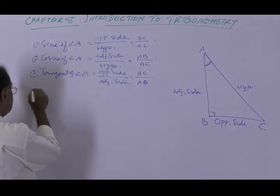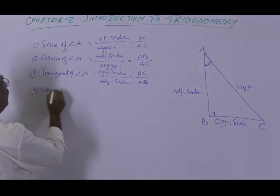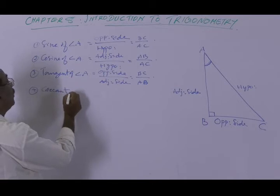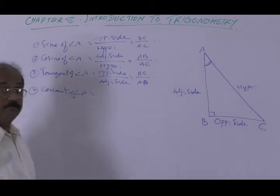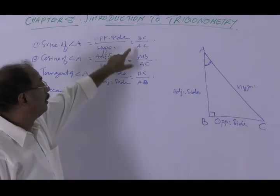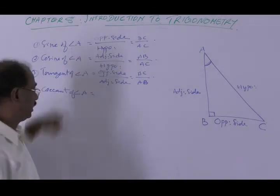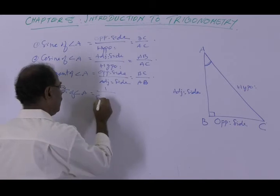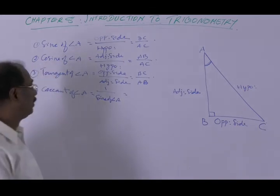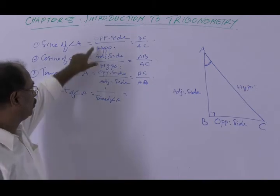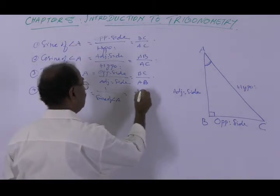The fourth ratio is cosecant of angle A, which is equal to the reciprocal of sine of angle A — that is, 1 divided by sine of angle A — which equals the hypotenuse divided by the opposite side, AC divided by BC.